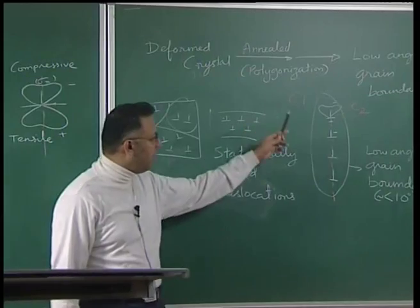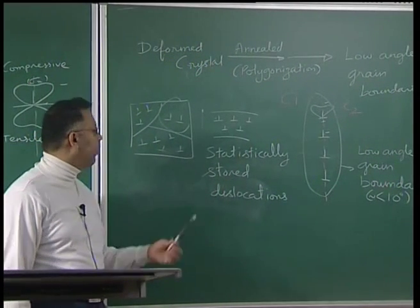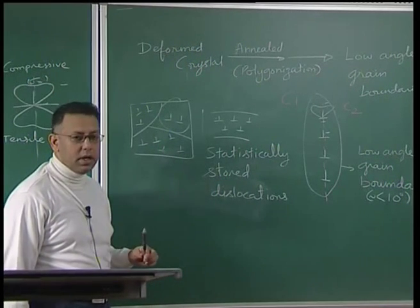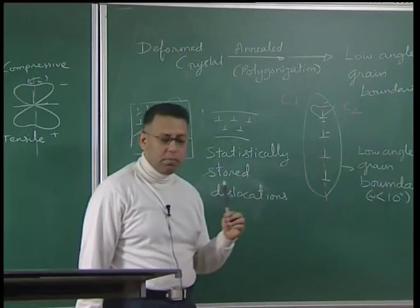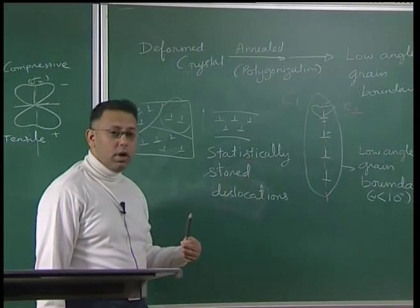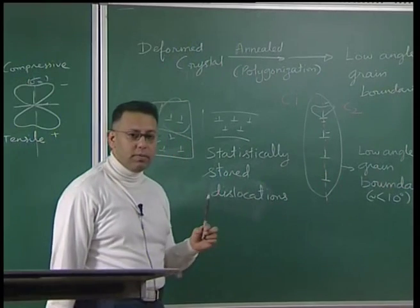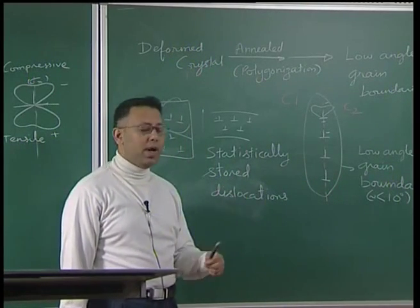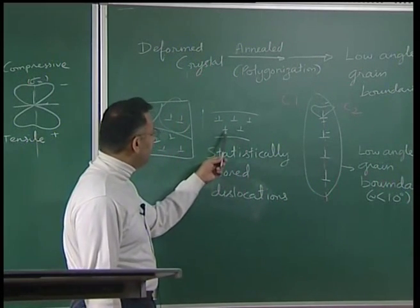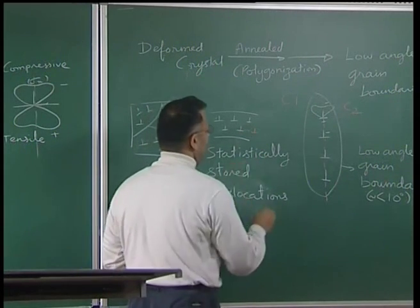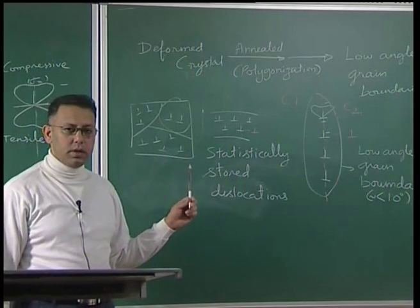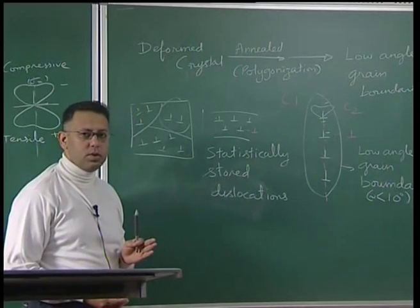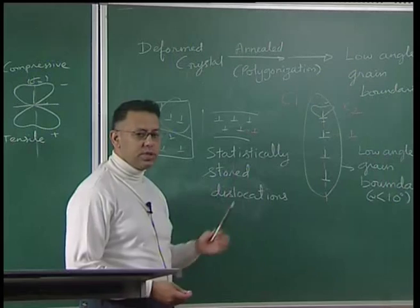If I try to plastically deform the specimen with random statistically stored dislocations, they are free to move because they play no structural role. On the other hand, if a dislocation leaves the grain boundary, the misorientation angle changes, making it energetically unfeasible to drive it away. Since the structural dislocation is already in a low energy configuration, more work must be done to move it compared to moving a random dislocation — a structural dislocation, though also an edge dislocation, responds differently to external stress.